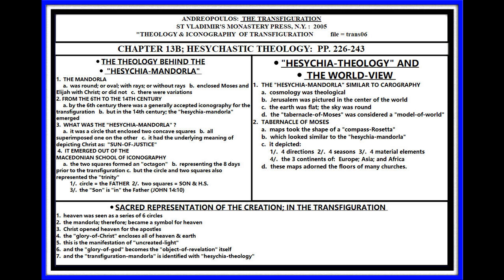These were symbolic maps — not a map like we think of today. They were a rosette or compass rosette, and they depicted four directions, four seasons, four material elements, and the three continents of Europe, Asia, and Africa. These symbolic maps adorned the floors of many of the churches. The best way to say it: symbolic artistic cosmology — in the shape of a rosette compass.